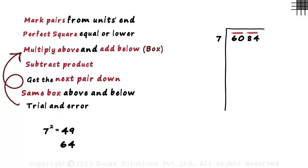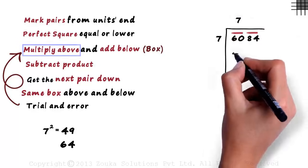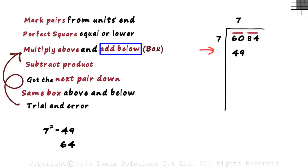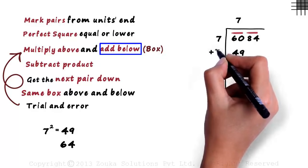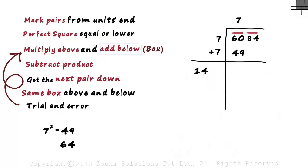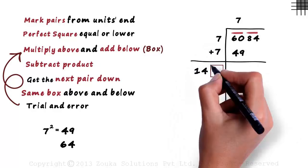In the next step, we multiply above and write the product here. So 7 multiplied by 7 gives us 49. And then we add below and draw a box next to it. 7 plus 7 gives us 14. And we leave some space for the box.